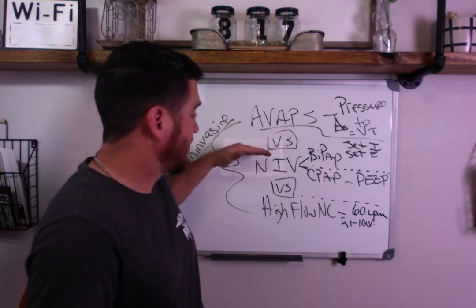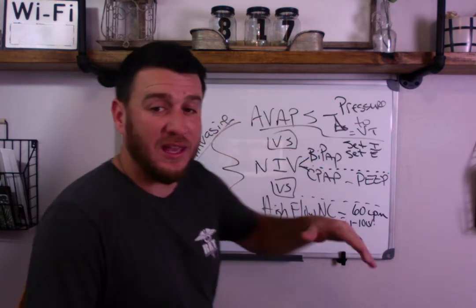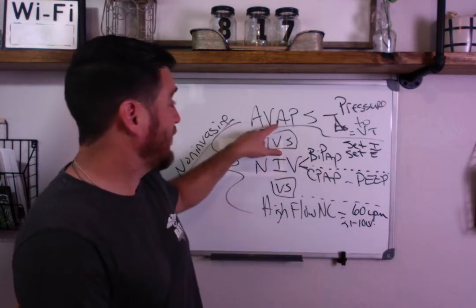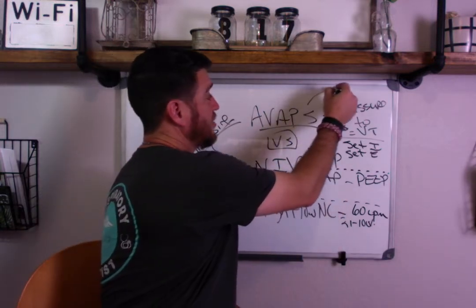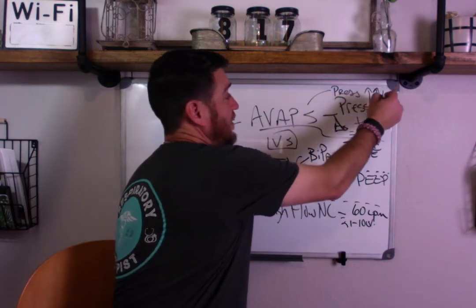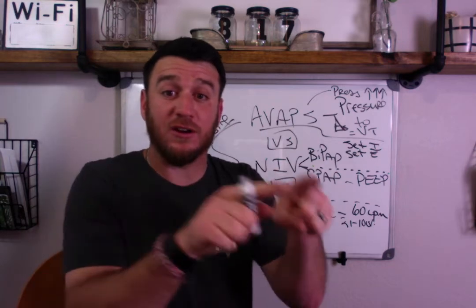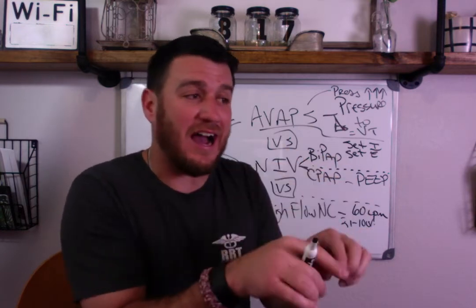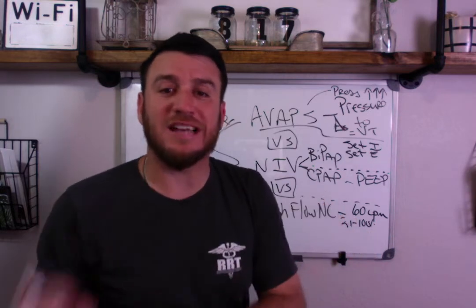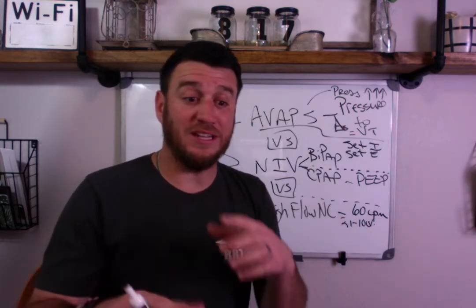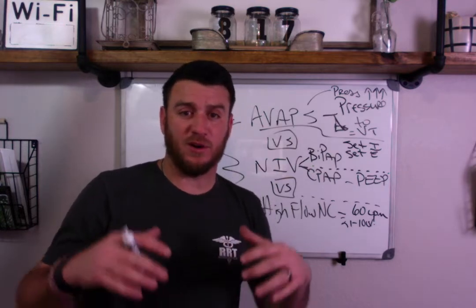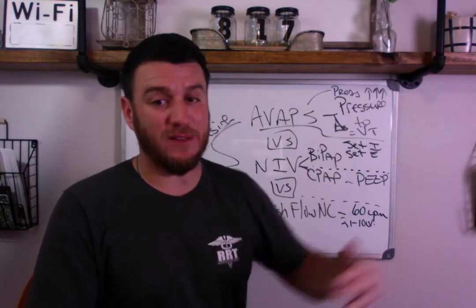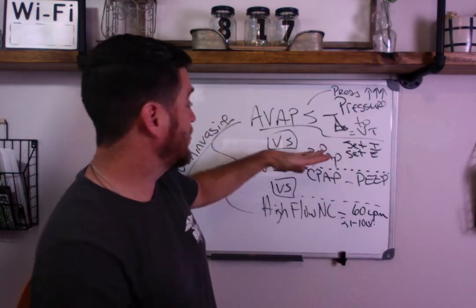When you think about AVAPs versus BiPAP, if you have a patient going bad you're going to see two different things depending on what mode you're in. In AVAPs, your IPAP — your inspiratory pressure — will be increasing, because it's taking a higher inspiratory pressure to achieve the target tidal volume you have set. The patient's inspiratory effort goes down, and the vent responds by increasing pressure to maintain that tidal volume. So the patient is getting worse, requiring higher pressure to achieve that tidal volume.